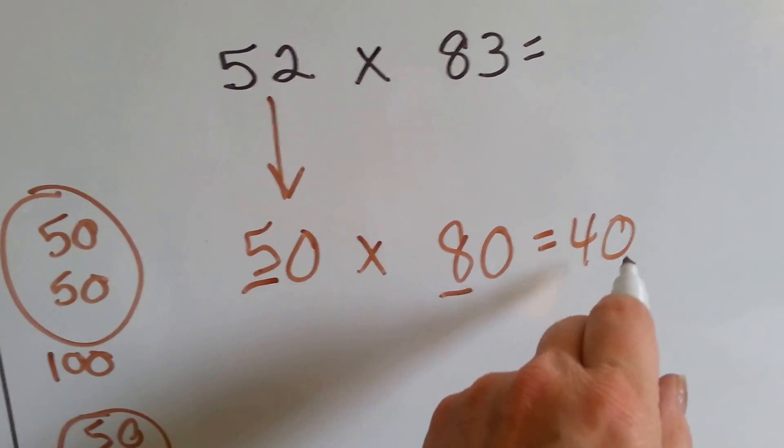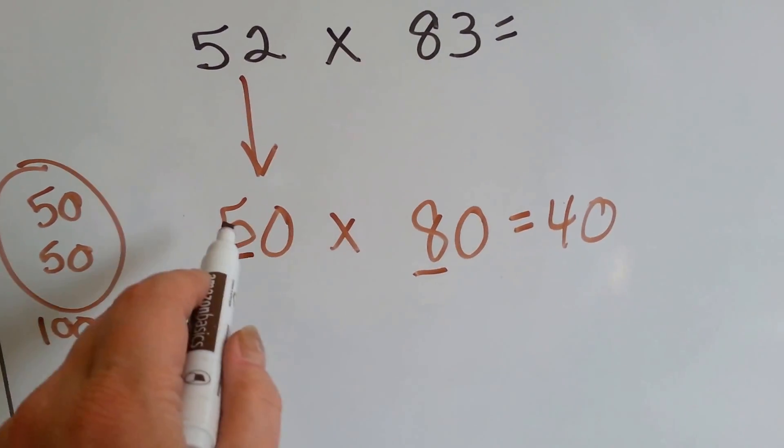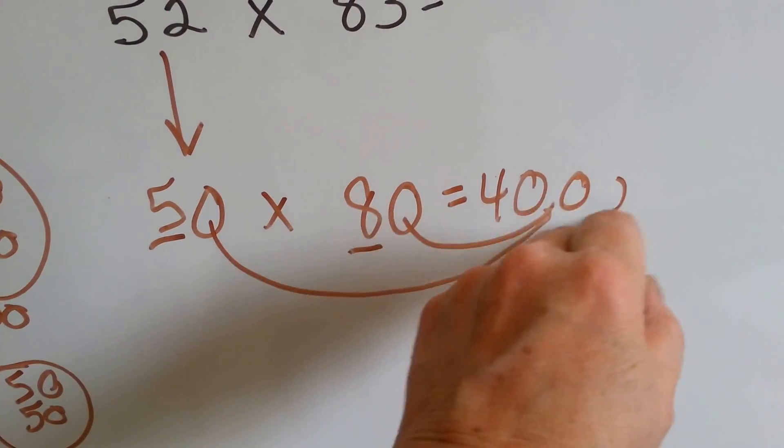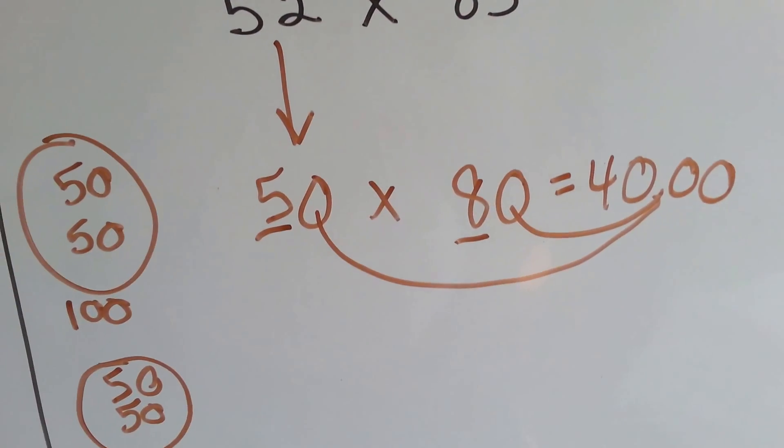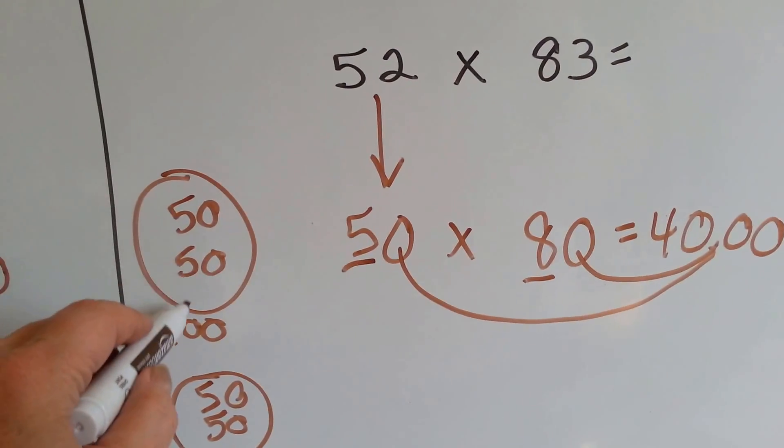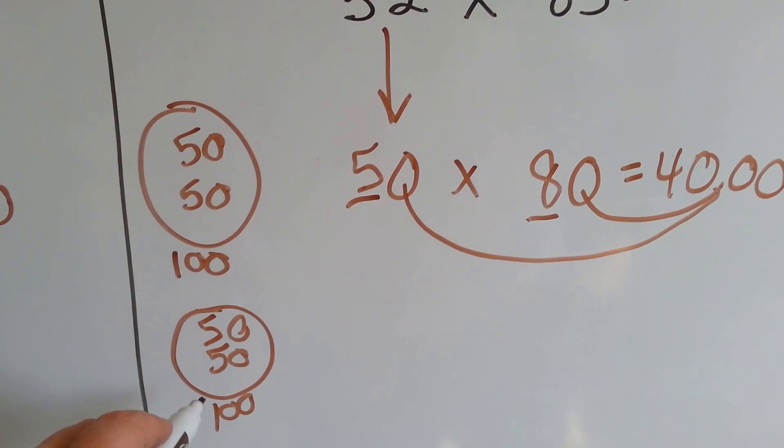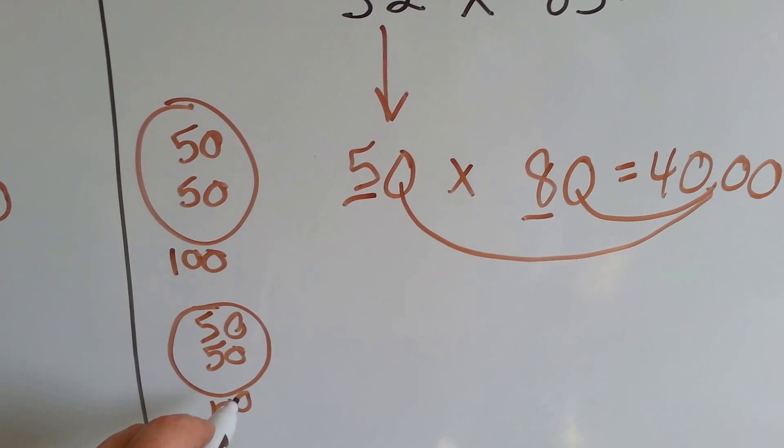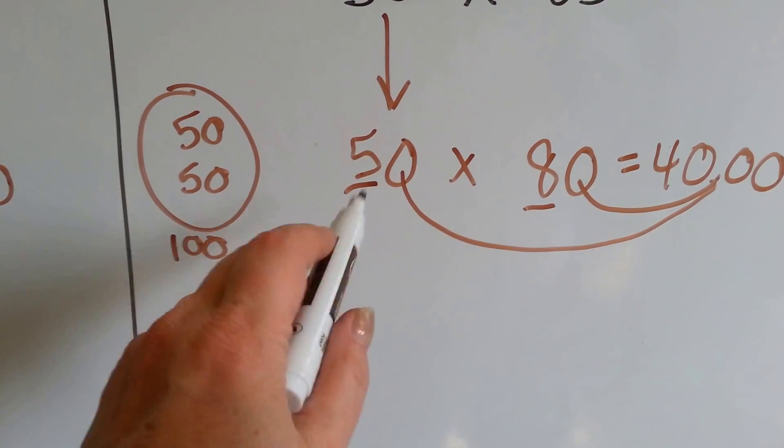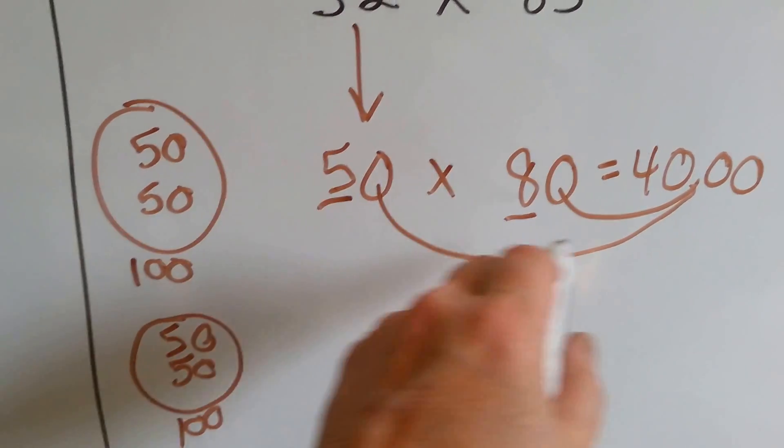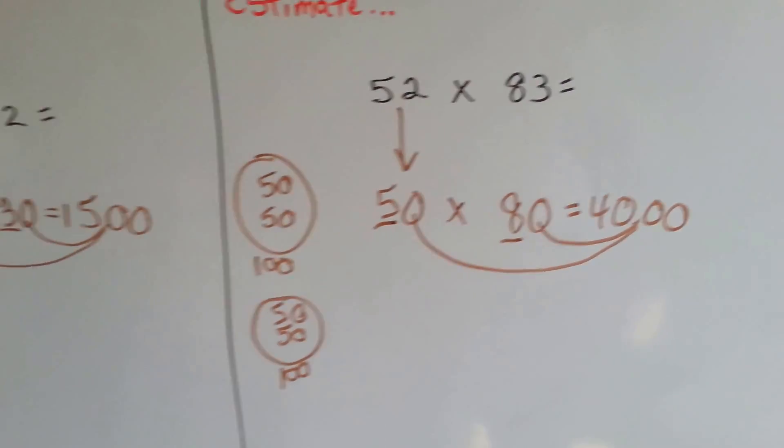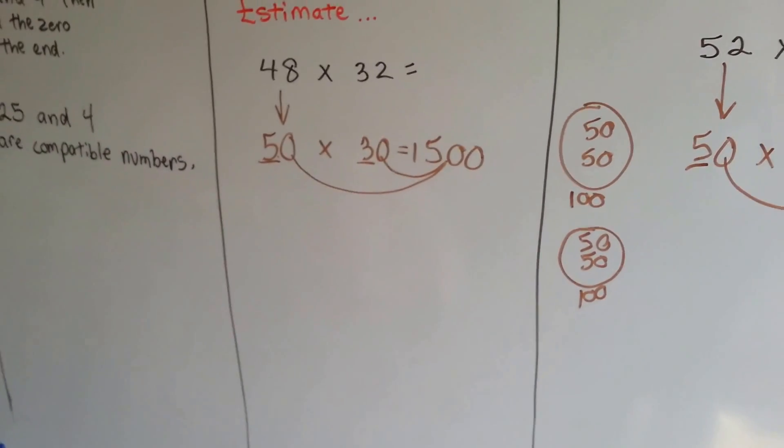You could also do five times eight is forty. Now, I know there's a zero in this answer, but we didn't count it yet. We just did five times eight. We still need to bring the zeros over, don't we? Fifty times eighty is four thousand. Or, we could have done two fifties are one hundred, four fifties are two hundred, six fifties are three hundred. So, eight fifties would be four hundred, and then we would add the zero. So, either way, you can estimate with two-digit multiplication.